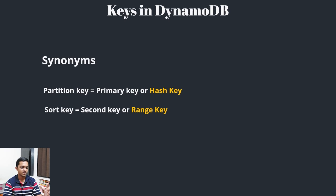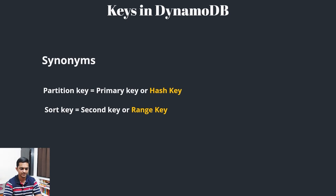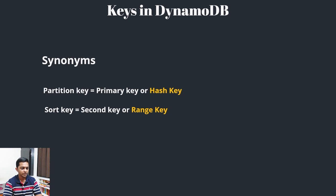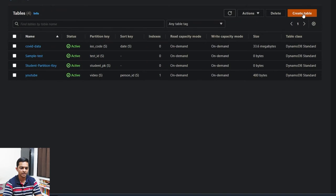The sort key is also called a secondary key or range key, because we perform range analysis over it. This helps us query our data patterns much more easily. Let's see this pattern in action by creating a new table.